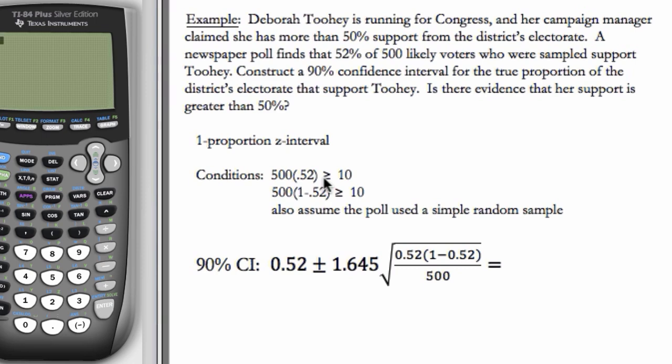We're doing a one proportion Z interval. We check our conditions: we have n times p-hat and n times (1 minus p-hat) greater than or equal to 10. We're going to assume that we have a simple random sample. And then we're going to construct our confidence interval. So we have p-hat plus or minus Z-star times the square root of p-hat times (1 minus p-hat) over n.